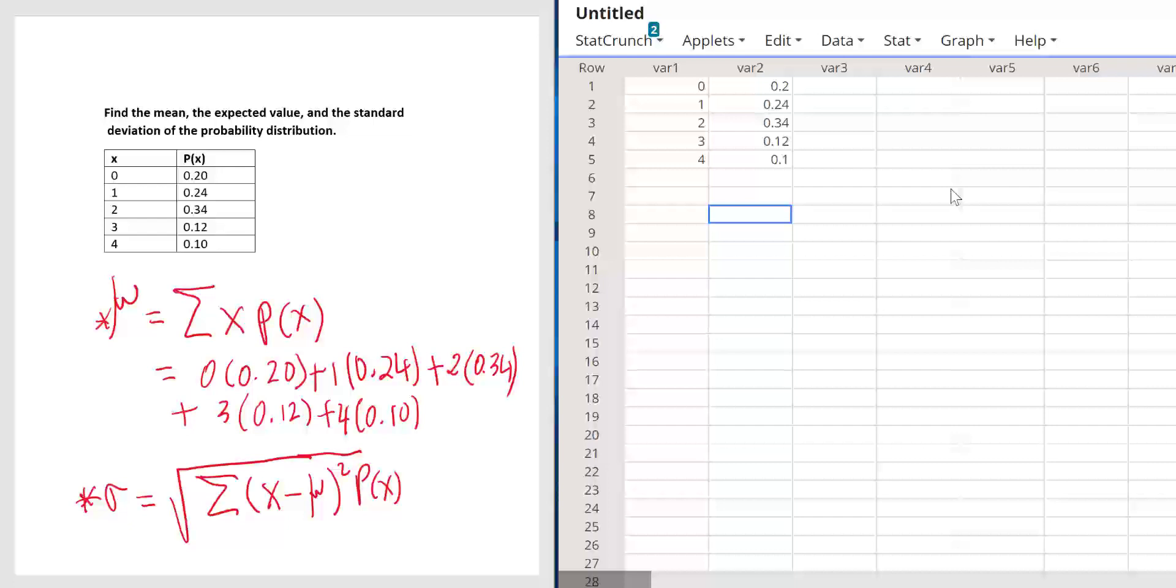In the first section in the probability distribution chapter, you will have a probability distribution just like what you're seeing on the left. The number of successes, x values, the probabilities, and then you are asked to find the mean, the expected value, and the standard deviation of the probability distribution.